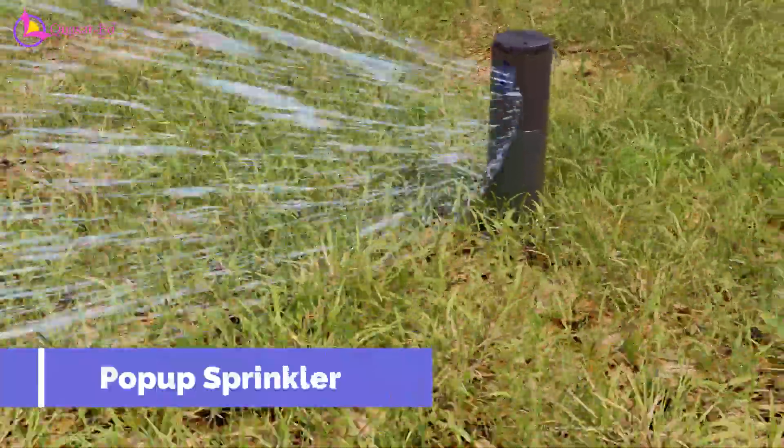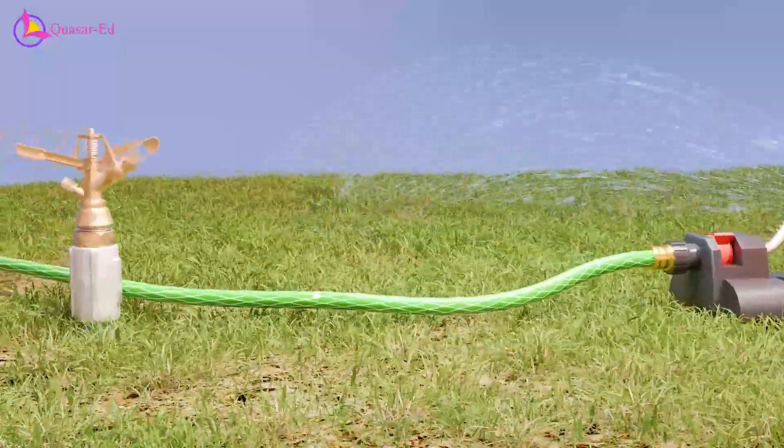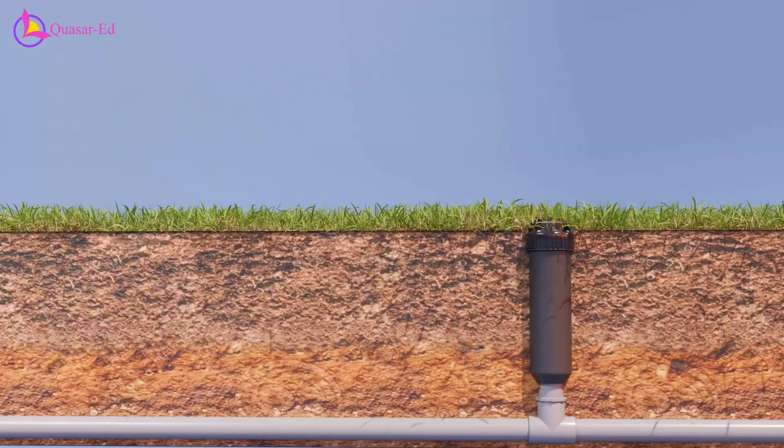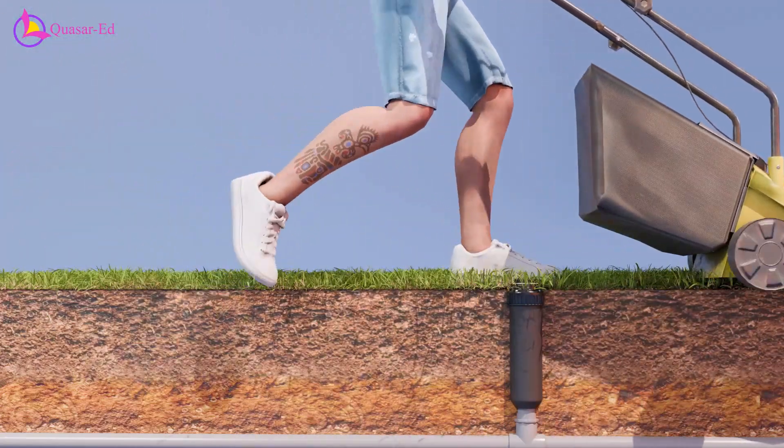This is a pop-up sprinkler. Unlike other types of sprinklers that stick out and can be distracting in your yard, it stays hidden at ground level, ensuring a clean look, keeping it from getting cut while mowing, and preventing anyone from tripping over it.